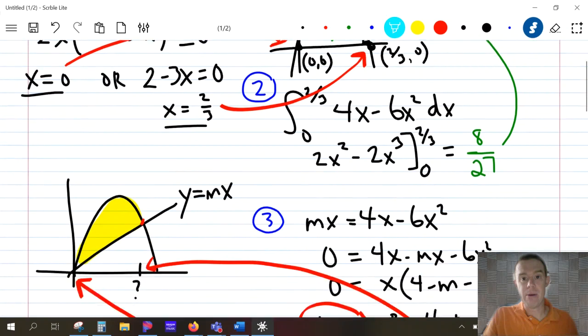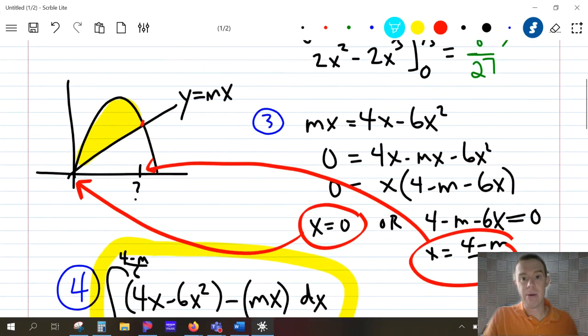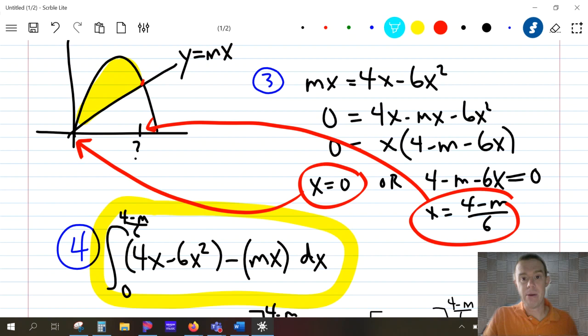Okay, so now let's introduce the line and get a little bit more detail here. I want to cut that area 8/27 in half. And so now I've drawn that picture again with the yellow area that I'm looking for. In order to find that area, I need to integrate between the parabola and the line. And in order to do that, I need to have the limits of integration again that go from zero to whatever this point is. And I don't know what that point is, because I don't know m.